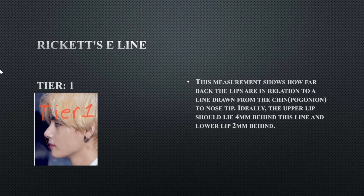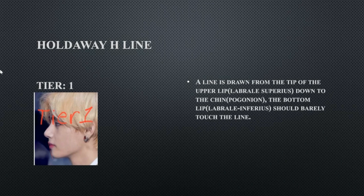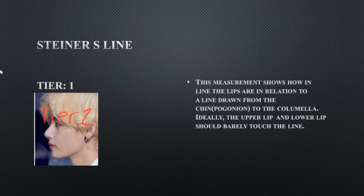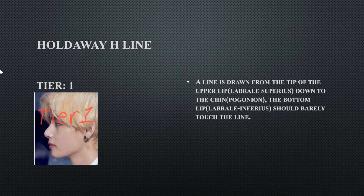His Ricketts E-line is perfect — going from the tip of the nose down to the chin, the bottom lip is supposed to be closer to the line than the upper lip, which it is. His H-line is also perfect at tier 1. His S-line is perfect as well — going from the middle of the nose down to the chin, both lips should be touching, and they do. The Burstone line — from the upper lip down to the chin, where the bottom lip should touch — is also tier 1.